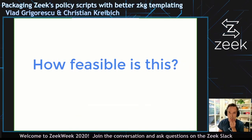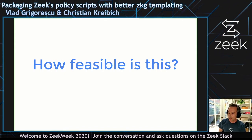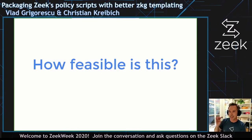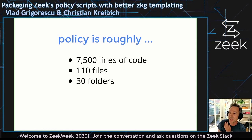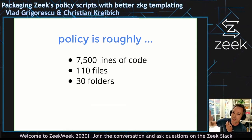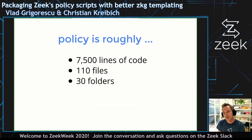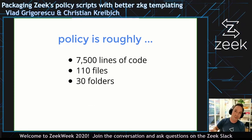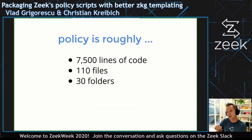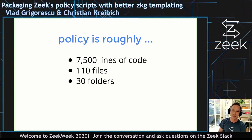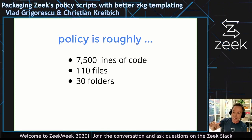This idea has been out there for a while — there's a GitHub issue and a bunch of good discussion on it. Before we started prototyping, we looked at feasibility. Policy is about 7,500 lines of code, about 110 files, 30 folders. So it's pretty clear that whatever we do here is not a totally trivial amount of work — pretty large, but not so large that we should have done it differently from the outset. Medium scale sort of effort.